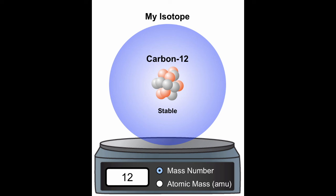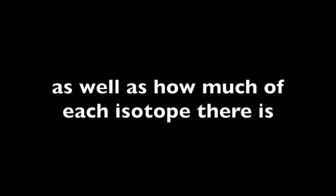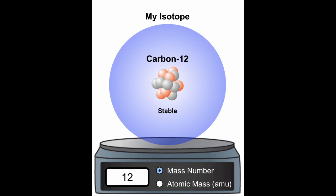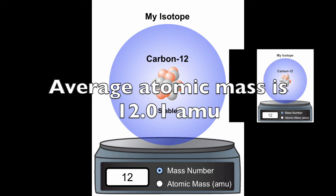Some isotopes are more common in nature than others. For example, a single chunk of carbon could have some carbon-12 with 6 protons and 6 neutrons, a little bit of carbon-13 with 6 protons and 7 neutrons, and maybe a tiny amount of carbon-14 with 6 protons and 8 neutrons. Carbon-12 is the most abundant isotope. The atomic mass reported in the periodic table is a weighted average, accounting for the mass of each isotope as well as how much of each isotope there is.